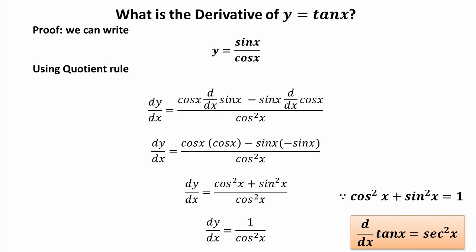So dy/dx = [cos(x)·cos(x) - sin(x)·(-sin(x))] / cos²(x) = [cos²(x) + sin²(x)] / cos²(x). Since cos²(x) + sin²(x) = 1, dy/dx = 1/cos²(x) = sec²(x). So the derivative of tan(x) is equal to sec²(x).